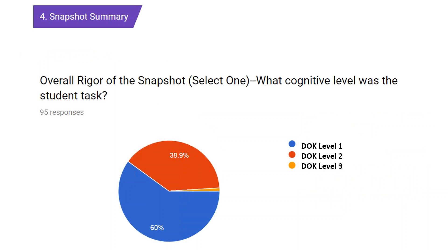The last section of the data collection helps us focus on the rigor level of the assignments. Data will be collected on the rigor level of the assignment, specifically looking at what the students are asked to do. The data is collected using the depth of knowledge levels. As you can see in this example, 60% of the observed assignments were at DOK Level 1, representing basic recall of factual information. This clearly sets the stage for moving into more rigorous assignments on this campus.